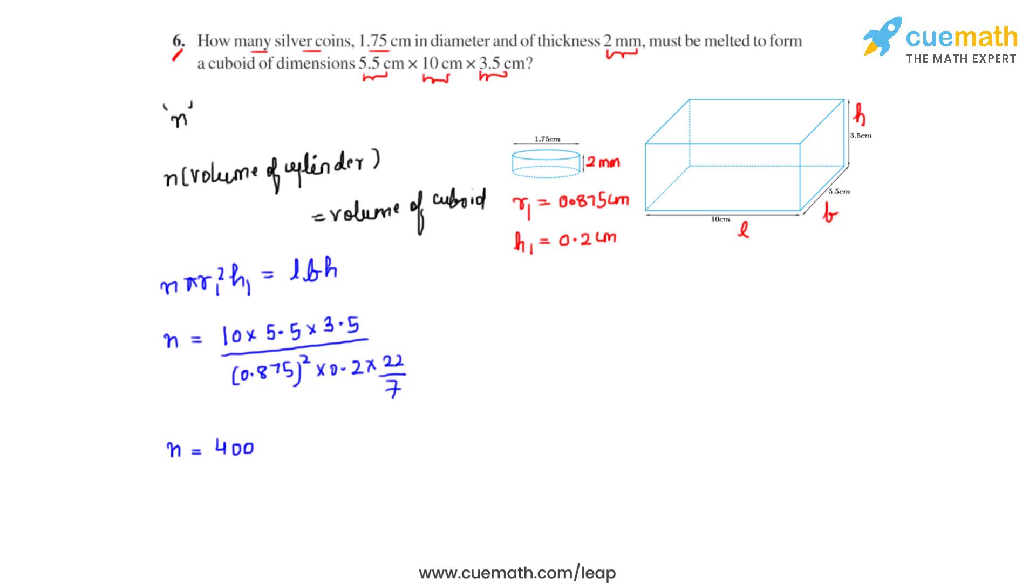So the number of such cylindrical coins which were needed to form a cuboid of the dimensions given in the question is 400 cylindrical coins, and this is how we solve this question.